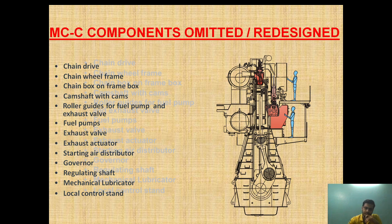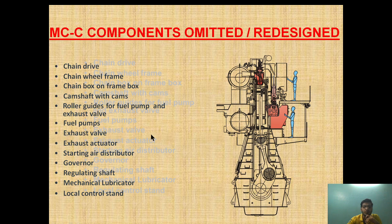Looking at what has been omitted: the chain drive, chain wheel frame, and chain box — the whole chain arrangement — have been replaced with a gearbox arrangement. The cam, roller guide for fuel pump, fuel pump, and exhaust valve have been replaced with an SCU, the Hydraulically Controlled Unit. The individual requirement for the fuel pump has also been omitted.